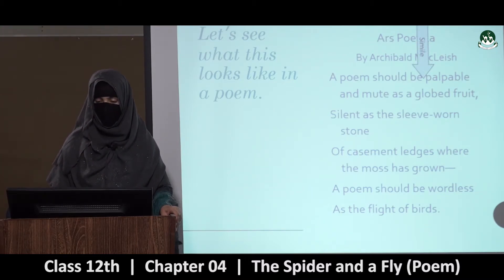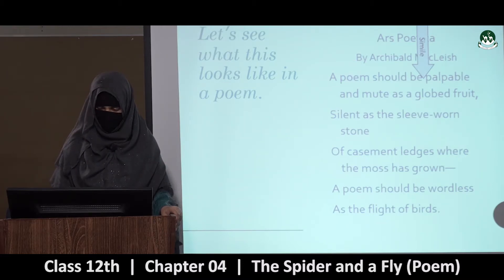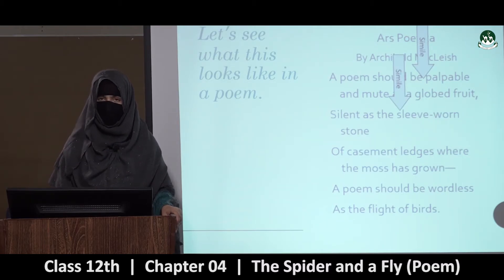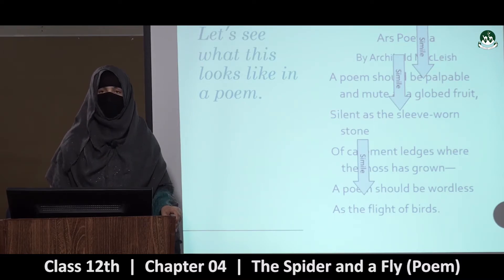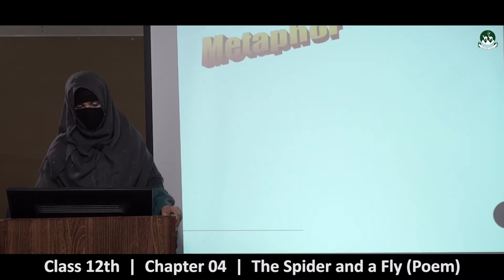Let's see what this looks like in a poem: 'A poem should be palpable and mute as a globed fruit, silent as the sleeve-worn stone of casement ledges where the moss has grown, a poem should be wordless as the flight of birds.' As a word comparison ke liye jahan use hua hai — these are all similes. Mute as a globed fruit, silent as the sleeve-worn stone, wordless as the flight of the birds.